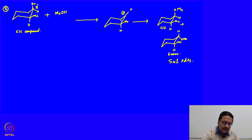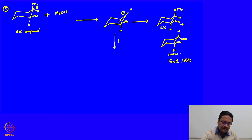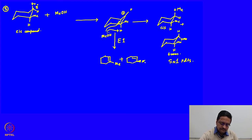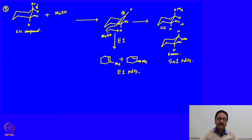On the other hand, there are beta hydrogens in the anti position. So one can think of elimination reactions with methanol — whether a proton is abstracted from here or there — giving two compounds which are the E1 products. Under this reaction medium, you will simultaneously get two different sets of products: one set of SN1 substitution products and another set of E1 elimination products.